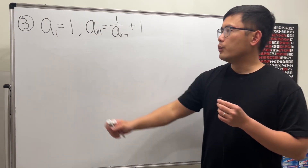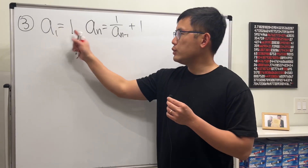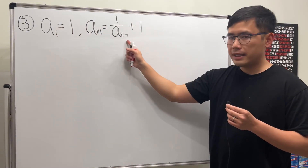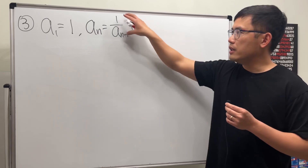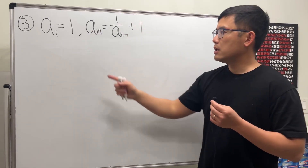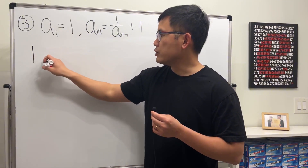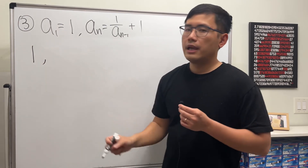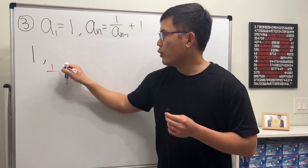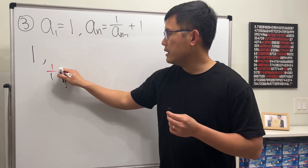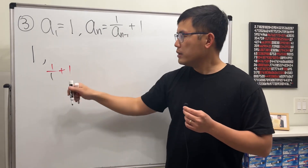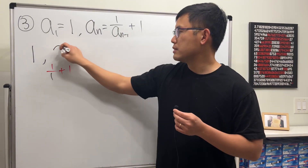Now for number 3: we have a1 is equal to 1, and an equals 1 over a(n−1), and then plus 1. This means just do the reciprocal of the previous and add 1. We start with the first term, which is 1. We do 1 over the previous and then add 1 to it, so the following term is just 2.